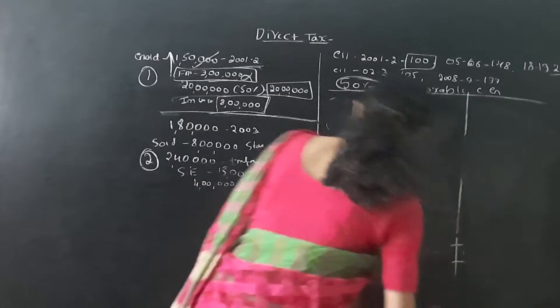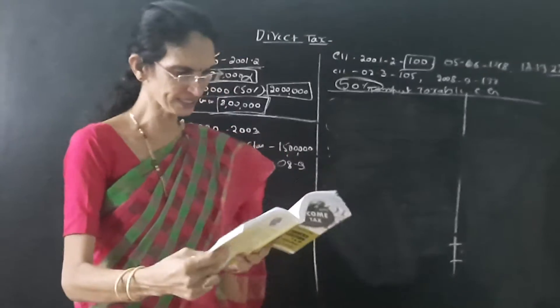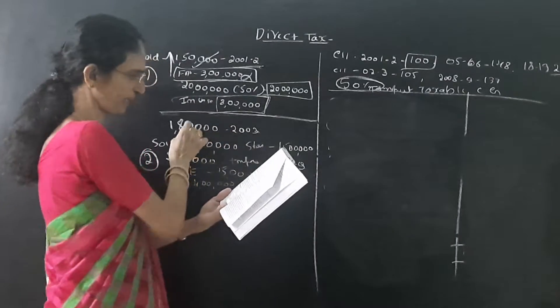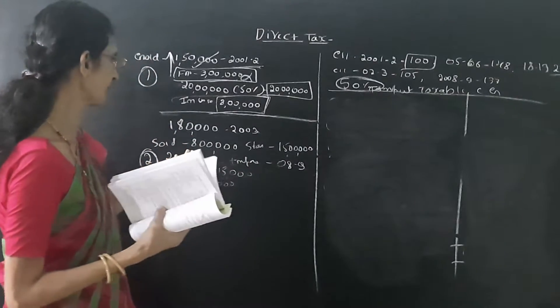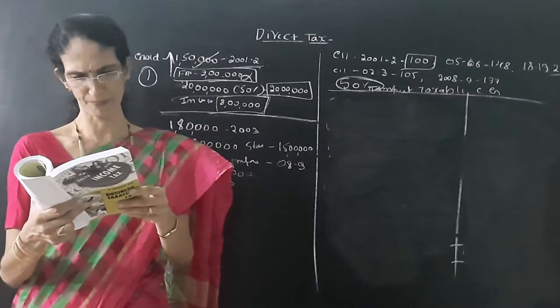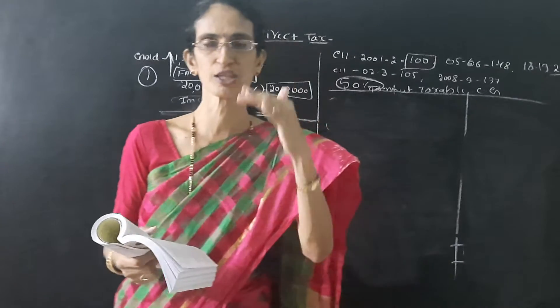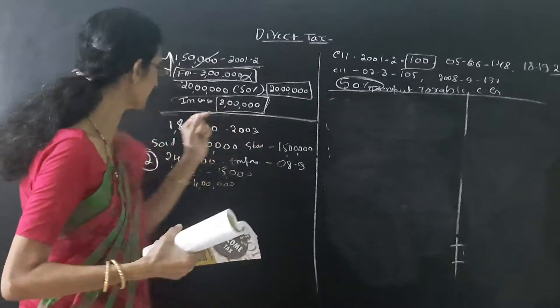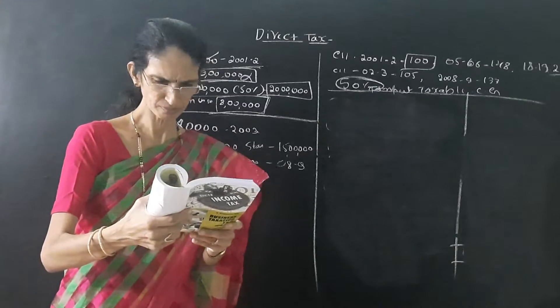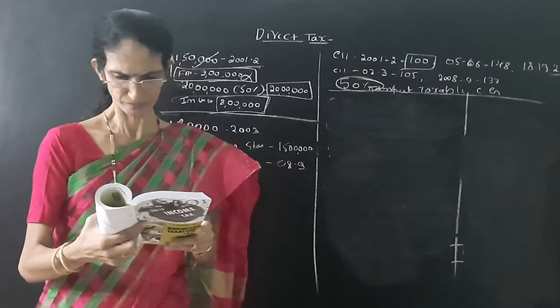This is the small problem. The second problem is like this. Navin sold a residential house which is purchased in January 2003 for Rs. 1,80,000. He sold 8,00,000. The value adopted by the valuation officer for the purpose of stamp duty was 50,00,000. That means he actually sold it for 8,00,000, but as per the valuation, the house value is 15,00,000.